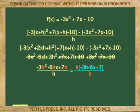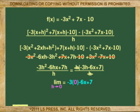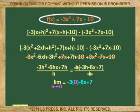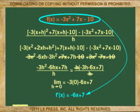We factor the common h out and cancel the h in the numerator with the h in the denominator. And finally, we simplify the derivative to negative 3h minus 6x plus 7. Like we have done in the past, we find the limit of the function as h reaches 0. The derivative of the original function of x equals negative 3x squared plus 7x minus 10 is negative 6x plus 7.